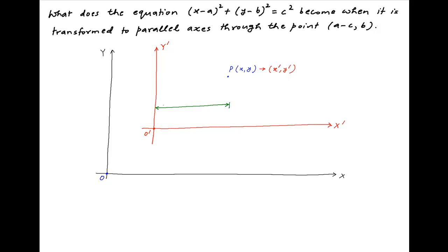Therefore, the horizontal distance of point P from O'Y' is X', and the vertical distance of the point P from the axis O'X' is Y'.